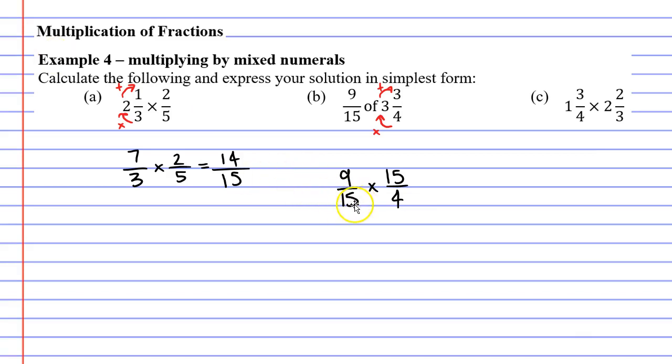You might notice that we have a number at the top that is the same as a number at the bottom. That means we can take a shortcut we can cancel them and then work it out. We get the solution 9 over 4.